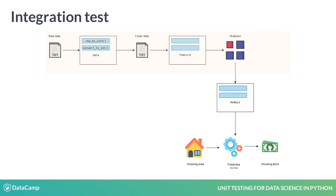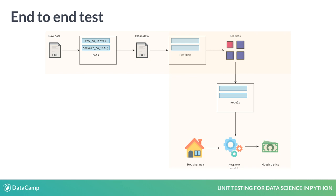For example, we could check if the data and the feature module work well when connected. Here, the argument will be the raw data and the return values to check would be the features. End-to-end tests check the whole software at once. They start from one end, which is the unprocessed data file, go through all the units till the other end, and check whether we get the correct model.